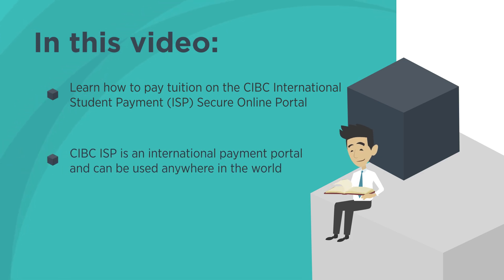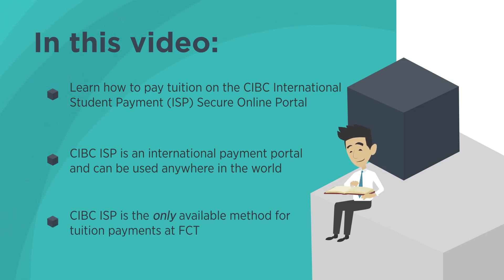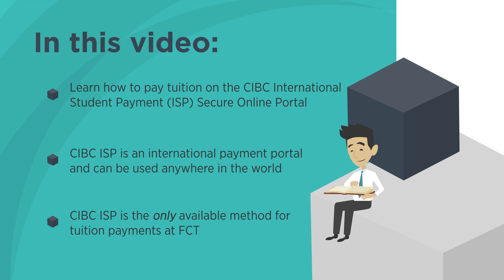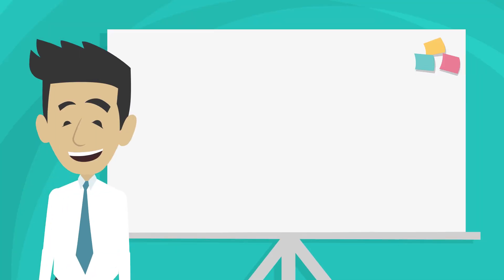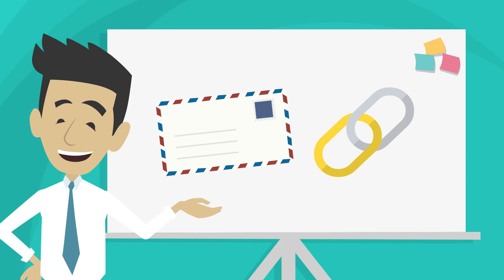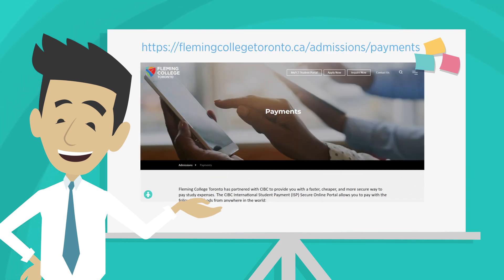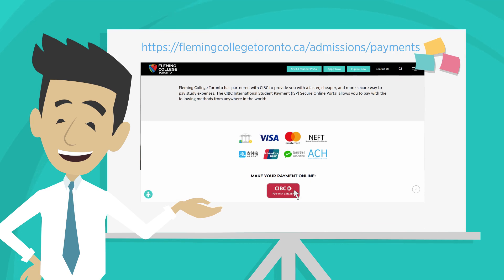The CIBC ISP Portal is an international payment portal and can be used for making payments from anywhere in the world. It is important to note that the CIBC ISP Portal is the only available method to make tuition payments to Fleming College Toronto. Your offer letter will contain the link to the CIBC ISP Portal. You may also visit FlemingCollegeToronto.ca and click on the payment link available on the webpage.